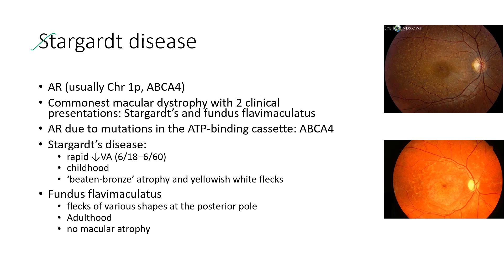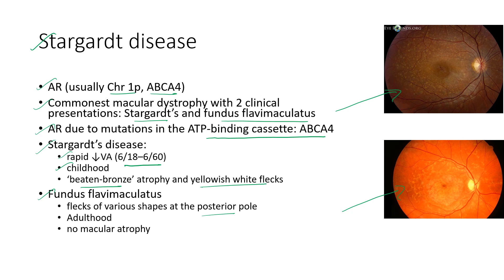Next is Stargardt disease. It is an autosomal recessive condition affecting chromosome 1p and the ABCA4 gene. It is the commonest macular dystrophy with two clinical presentations: Stargardt disease and fundus flavimaculatus. In Stargardt disease there is rapid loss of vision — diminution of vision in the range of 6/18 to 6/60 — typically occurring in childhood, with beaten bronze appearance and yellowish-white flecks as shown in this fundus picture. In fundus flavimaculatus there are flecks of various shapes at the posterior pole, it presents in adulthood, and there is no macular atrophy so there is no diminution of vision.